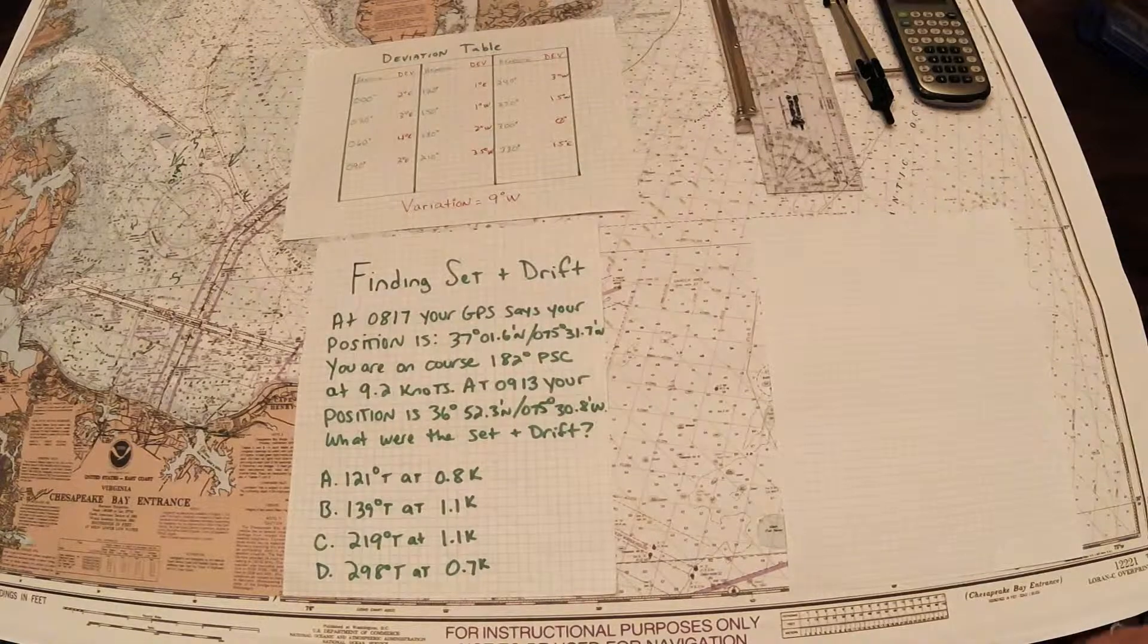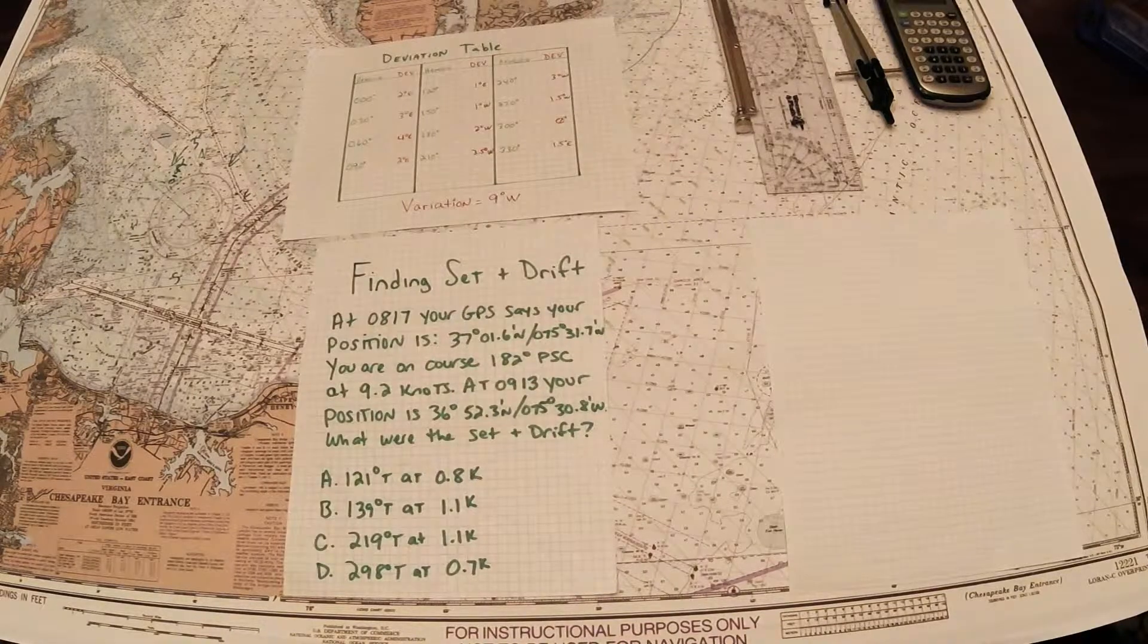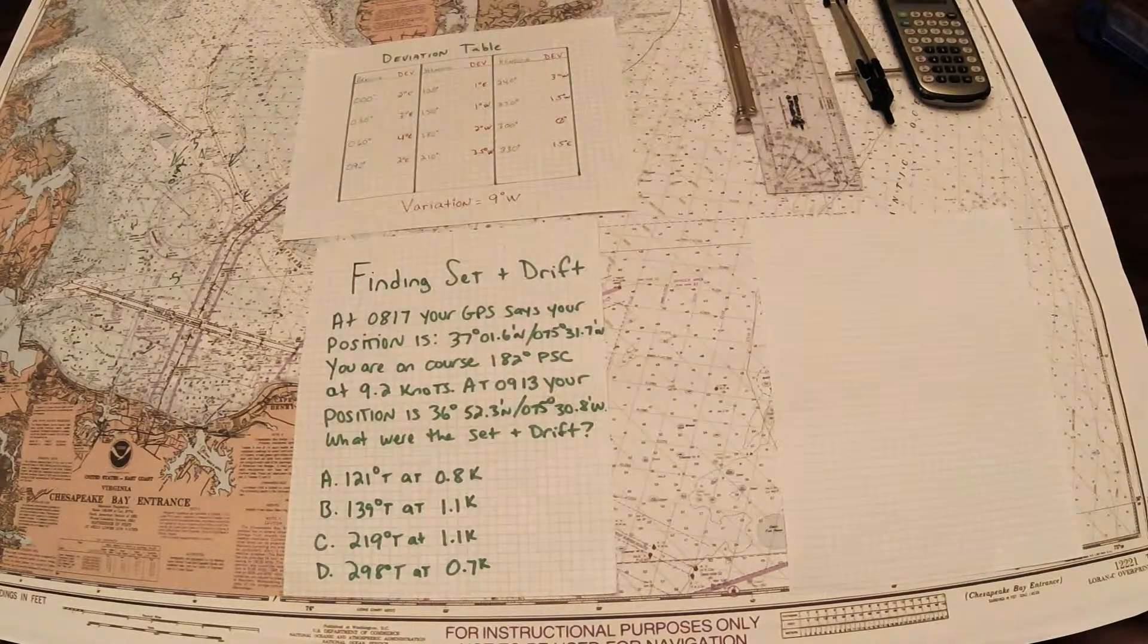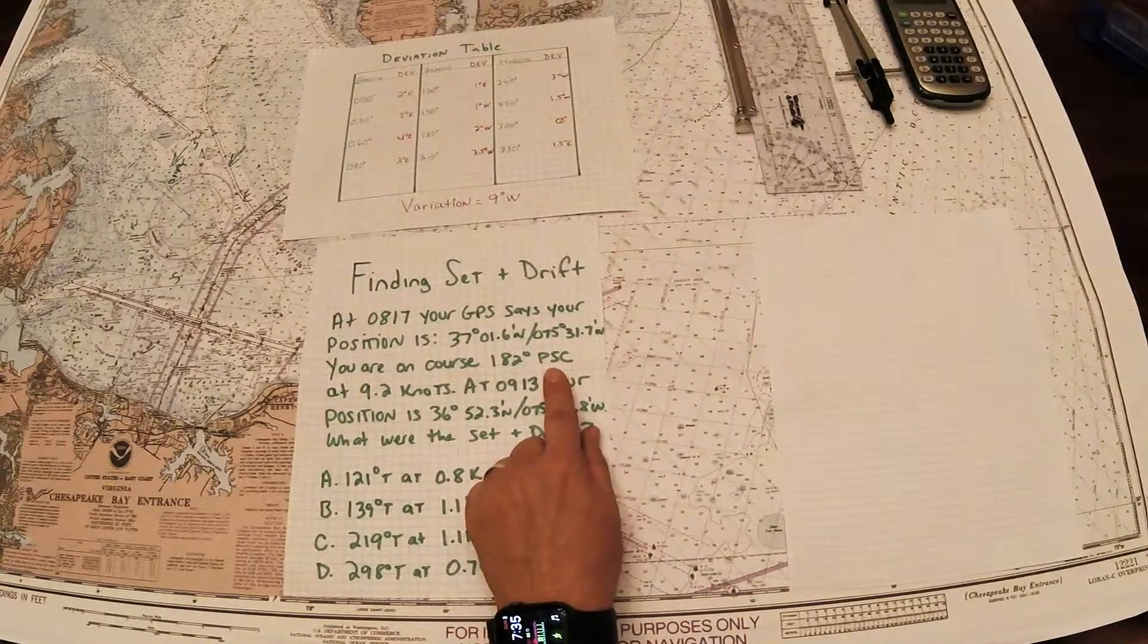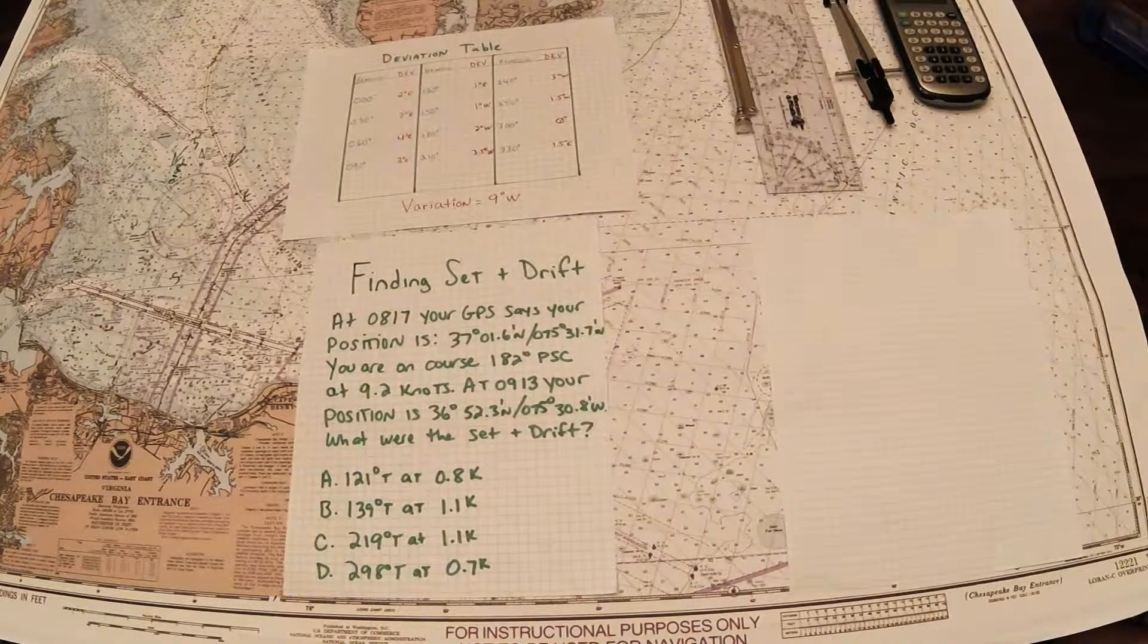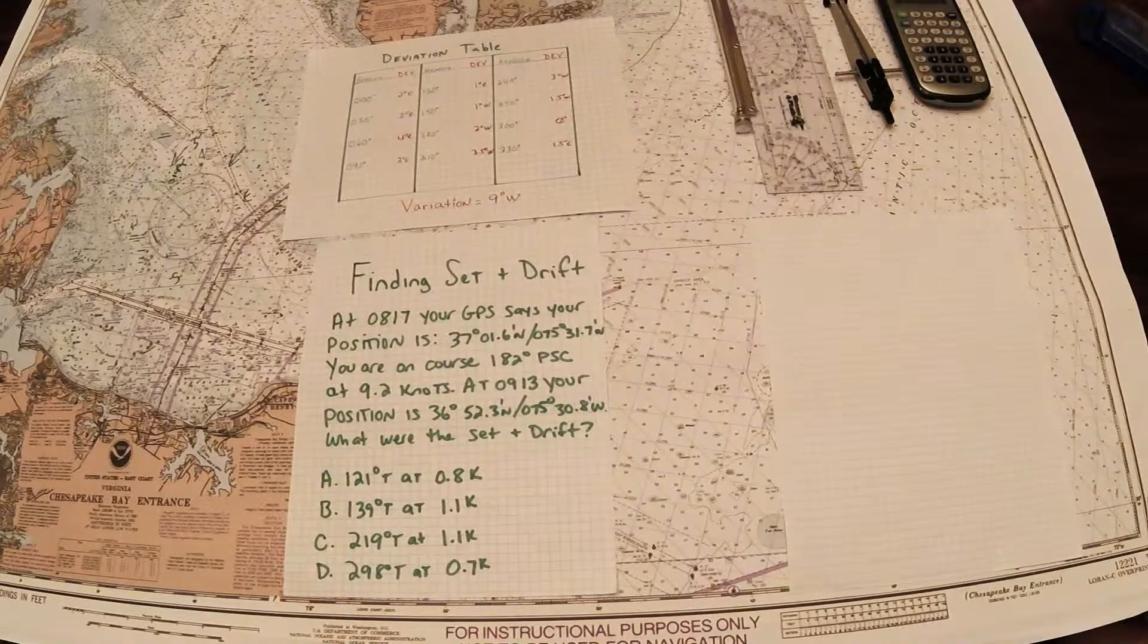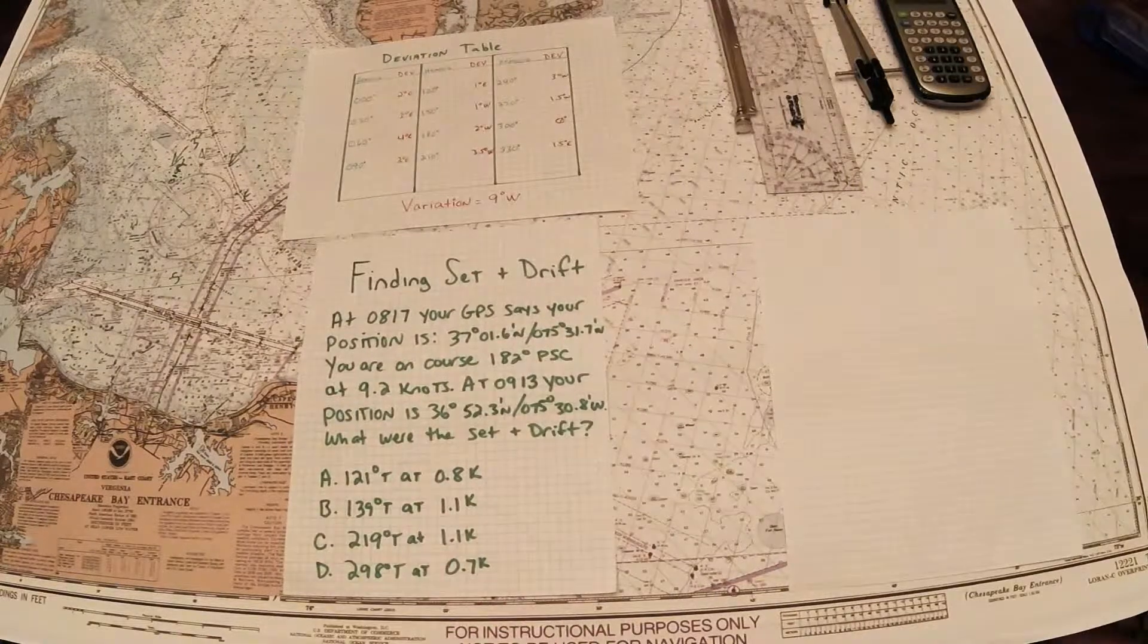The first thing we're going to do is read through the problem. It says at 0817 your GPS says that you're in position 37 degrees 01.6 north, 075 degrees 31.7 west. You're on a course of 182 PSC, so that tells me I have to convert that to true before I can put it on the chart. Our speed is 9.2 knots. At 0913 your position is 36 52.3 north, 075 30.8 west. What were the set and drift?